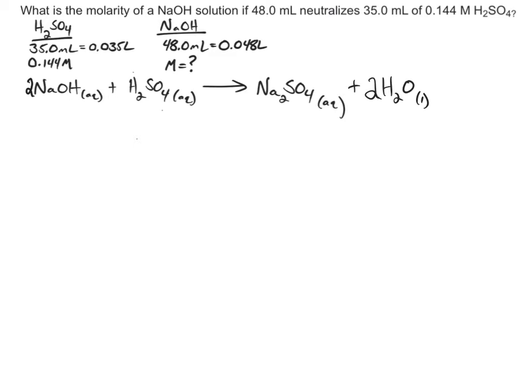Step two would be to find the moles of both reactants. When we think about that, we know molarity is equal to moles divided by liters. What we're given for sulfuric acid is that we have a 0.144 molar solution of sulfuric acid. We're going to be looking for the moles of sulfuric acid. And what we do know is that in the solution, it took 0.035 liters.